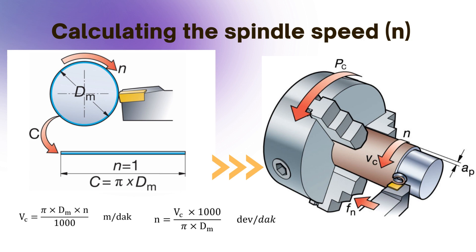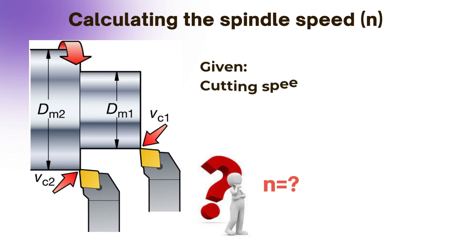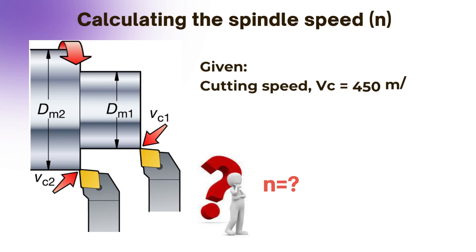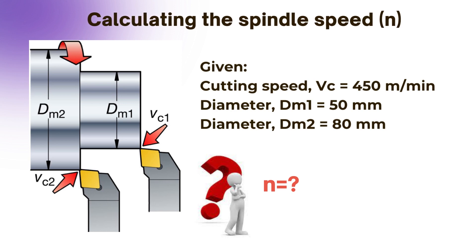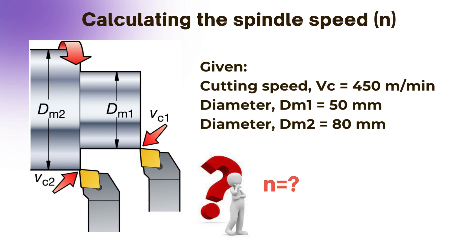In this formula, d refers to the diameter of the workpiece on the lathe. In milling and drilling machines, it refers to the diameter of the cutter and drill. At what speed should the spindle of the lathe rotate according to the cutting speed and workpiece diameter information given on the screen? Calculate the spindle speed using the given values.